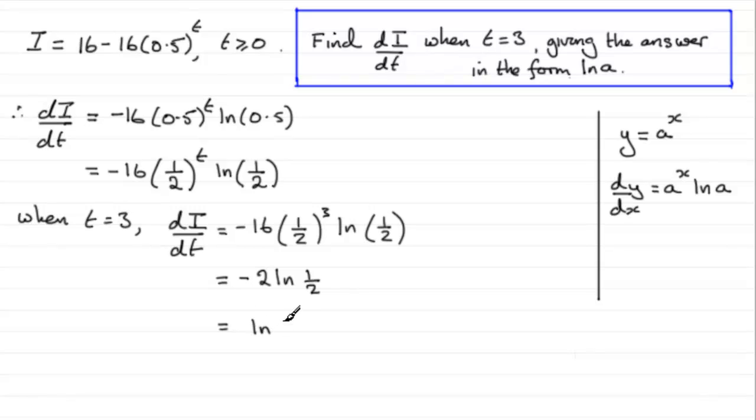You should remember that if you've got a number at the front, a value at the front, then this can go up as a power. So these two are equivalent to one another. The natural log of a half to the power minus 2.